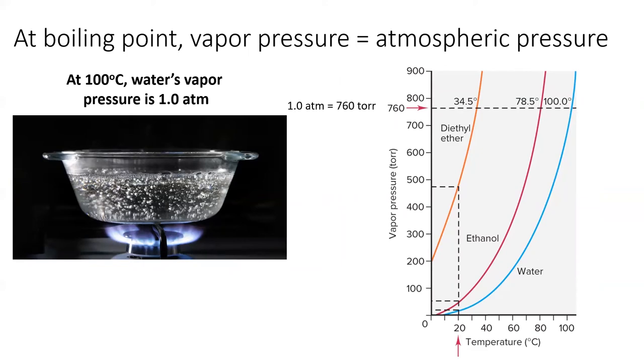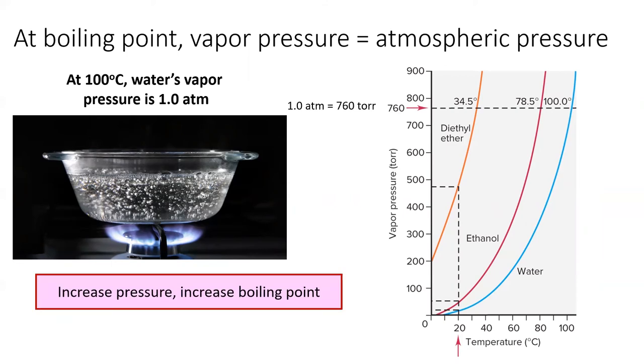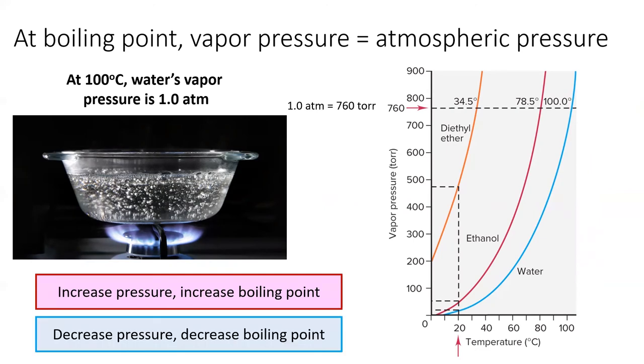The dependence of boiling point on pressure leads to two surprising discoveries. First, you can increase the boiling point by increasing the surrounding pressure. This principle is used by pressure cookers to cook food at a higher temperature and thus cook the food quicker. Secondly, if you decrease pressure, you decrease the boiling point. This is the reason that frozen pizzas have a different cooking time at higher elevations, where the atmospheric pressure is lower.